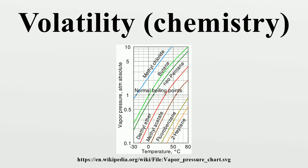Volatility is directly related to a substance's vapor pressure. At a given temperature, a substance with higher vapor pressure vaporizes more readily than a substance with a lower vapor pressure.